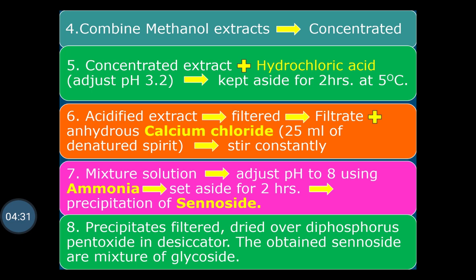To this concentrated extract, hydrochloric acid is added to adjust the pH to 3.2, and then it is kept aside for 2 hours at 5°C. The acidified extract is then filtered, and the filtrate obtained is treated with anhydrous calcium chloride prepared in 25 ml of denatured spirit.